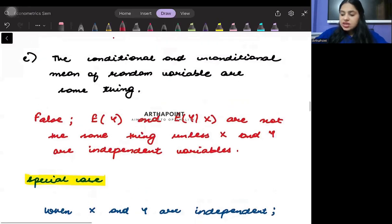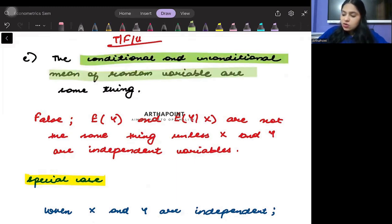Again, look into this. This is again a true-false-uncertain statement. It says the conditional and unconditional mean of random variable are the same thing. Absolutely incorrect.